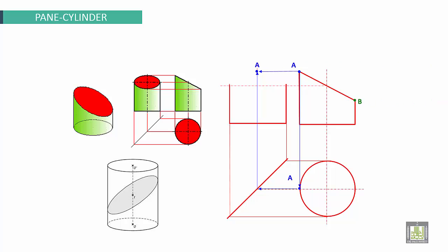And now this is point B. It will be projected down, the same point B. By using the meter line we'll get point B on the side view.